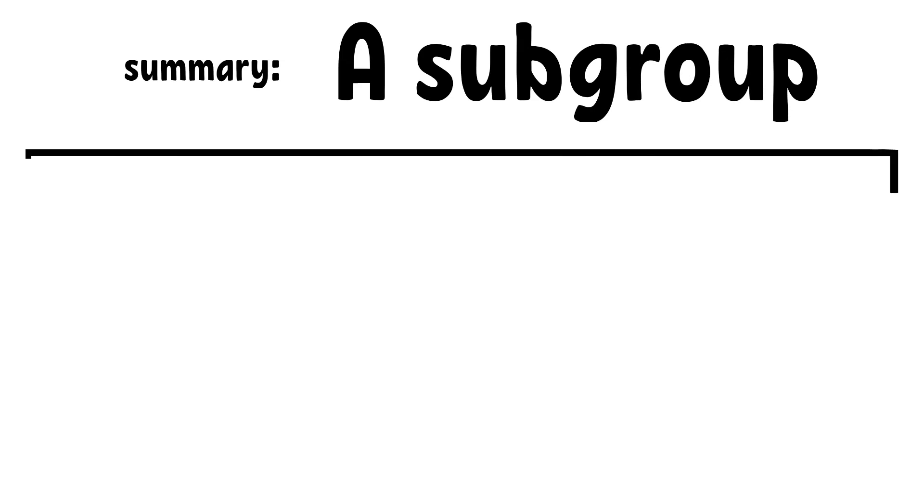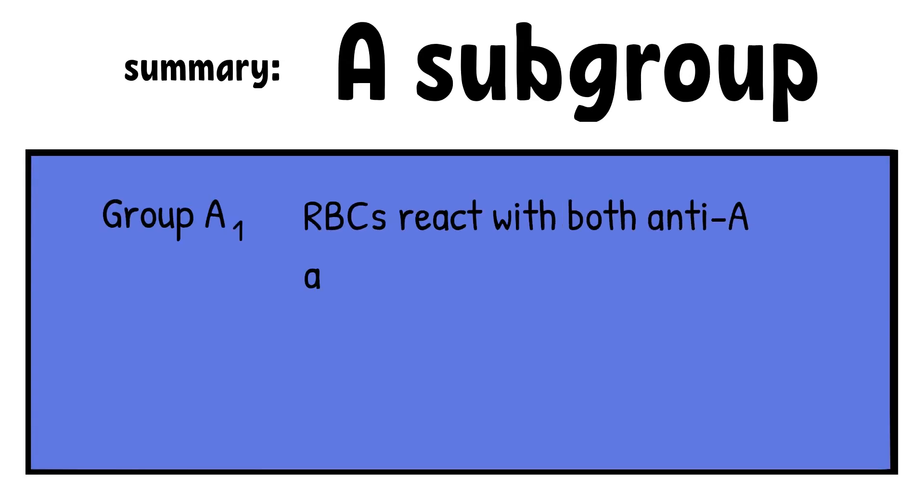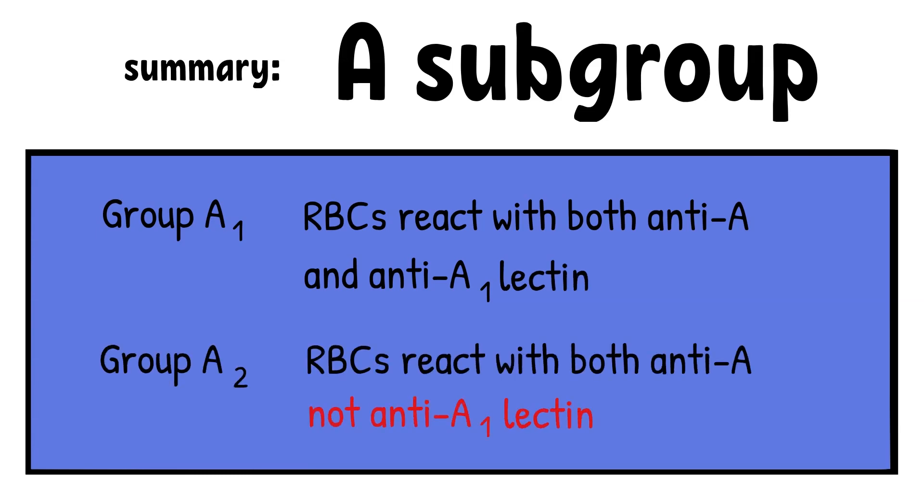In short, group A1 RBC reacts with both anti-A and anti-A1. Group A2 RBC reacts with only anti-A and not anti-A1 lectin.